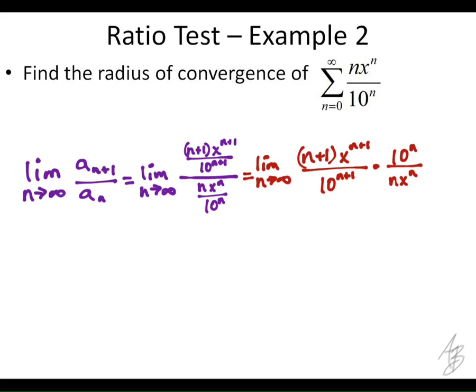Just like the last one, we're going to have a lot of stuff that cancels. Where do you guys want to start? Okay, the 10 to the n and the 10 to the n plus 1, those are going to cancel out and what's going to be left and where? Yeah, we'll have a 10 left in the bottom.